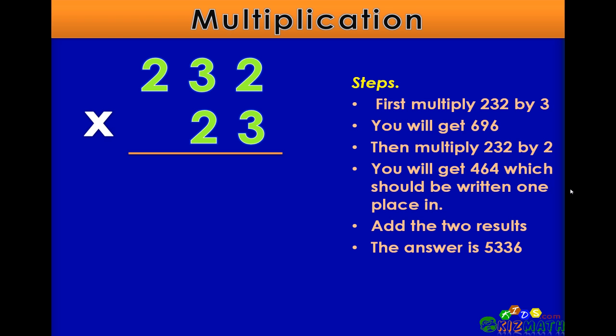So to begin, we're going to start with 232 multiplied by 3. 3 times 2 is 6. 3 times 3 is 9. 3 times 2 is 6.